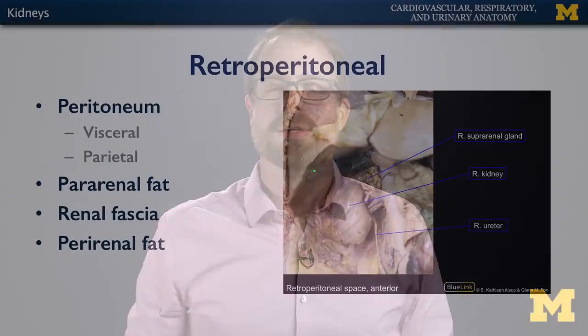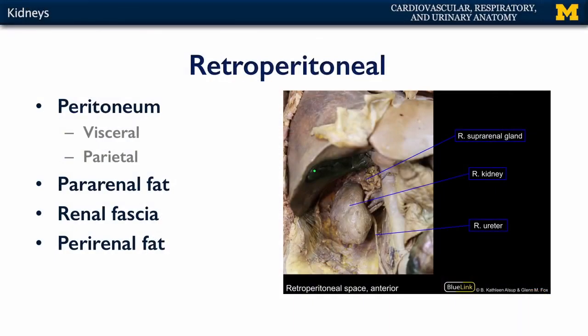The kidneys join other structures such as the aorta, the inferior vena cava, the lion's share of the pancreas, and portions of the duodenum as retroperitoneal structures. The peritoneum is a membrane that lines the abdominal pelvic cavity and the viscera within it — there's parietal peritoneum on the body wall and visceral peritoneum on the organs. Certain organs are posterior to the parietal peritoneum in what we call the retroperitoneal space. Here you can see a kidney that's been partially dissected, with some peritoneum still in front of it.